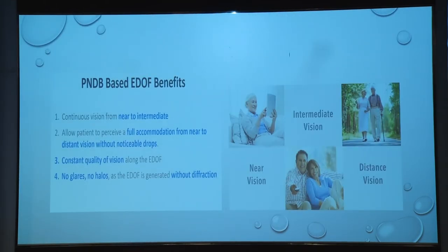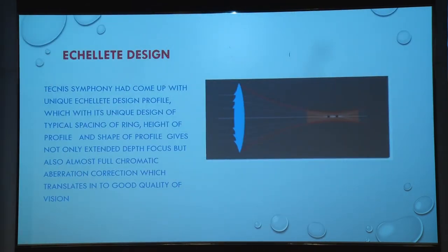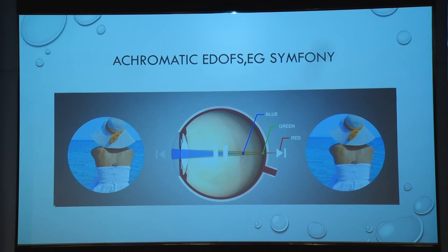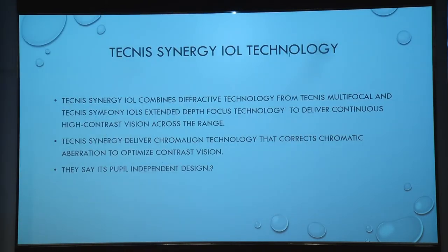So we get near, intermediate, and distant vision. This is the Echelette technology in which the Symphony lens has been developed — a unique design profile with specific ring spacing, height, and shape that gives not only extended depth of focus but also chromatic aberration correction, producing good quality of vision with clear images across blue, red, and green wavelengths. The Tecnis Synergy lens combines diffractive and refractive technology with elongated depth of focus; they claim it is pupil-independent, though I still have some doubt about that.